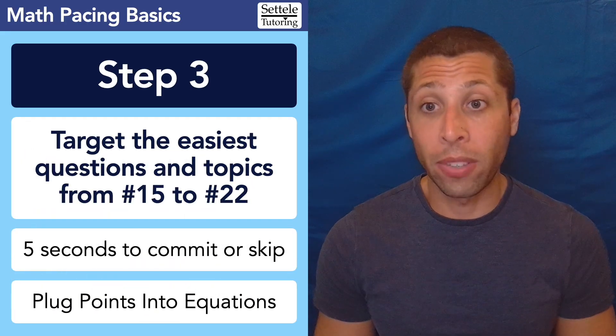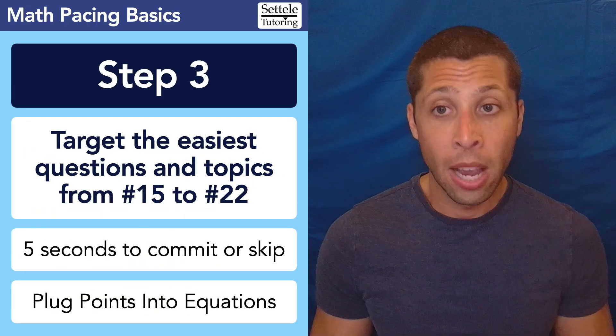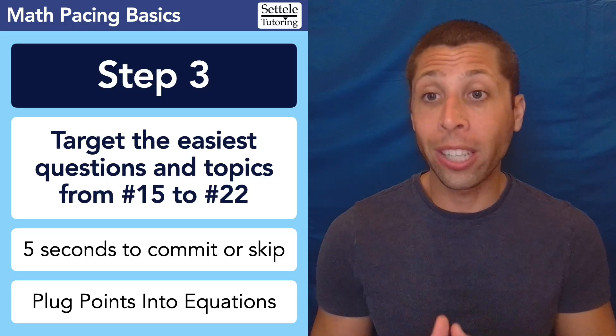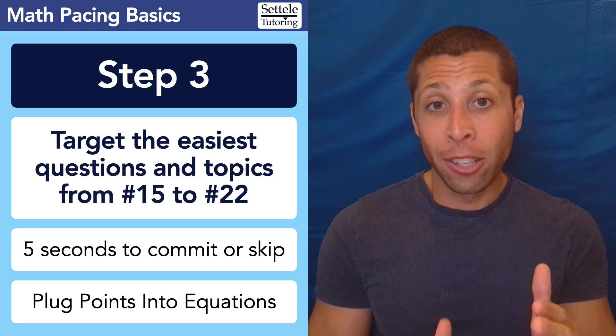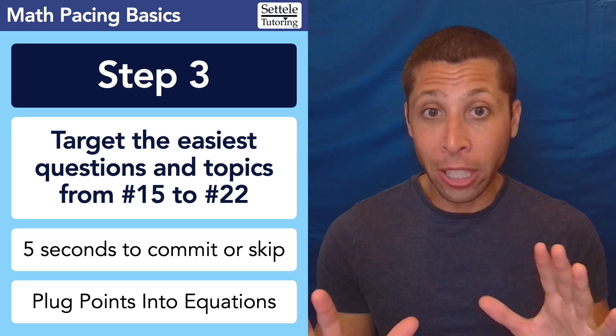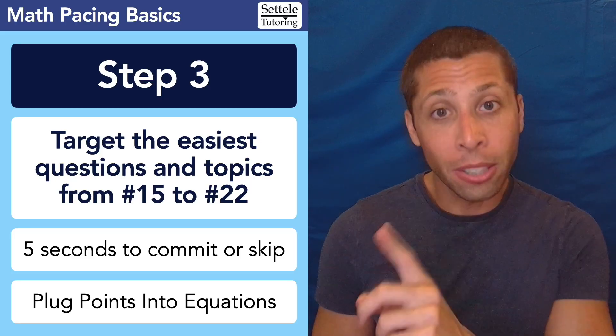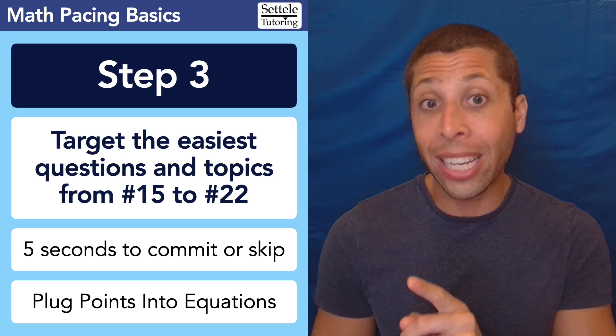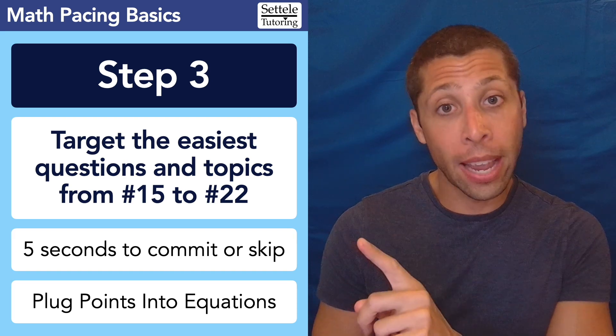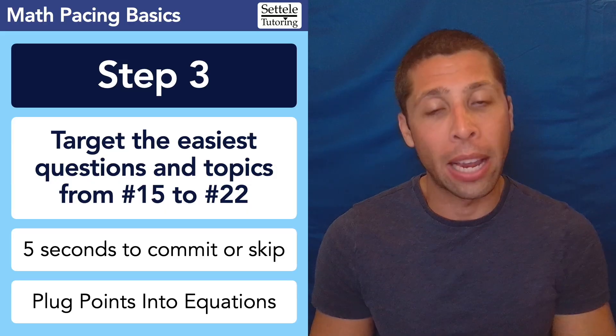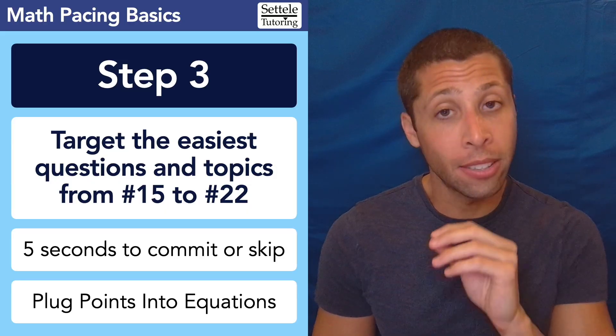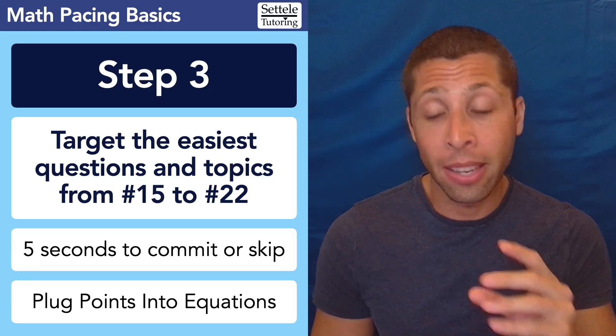Now step 3 is going to apply to questions 15 to 22, the hard questions. Basically, you want to make sure you are targeting the easiest questions and topics within this range. So even I do this. I'm really good at math. I only ever get 800s, but I'm still thinking about each question individually and deciding whether I want to commit to answering it or skip it for now. I'm probably going to have time to go back to everything, but I'm still trying to find the easiest questions, the easiest topics, the things that are most likely to get me some points.